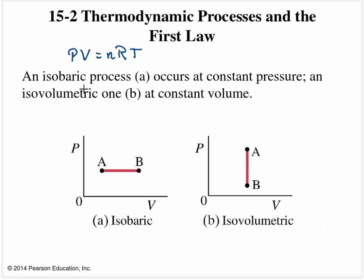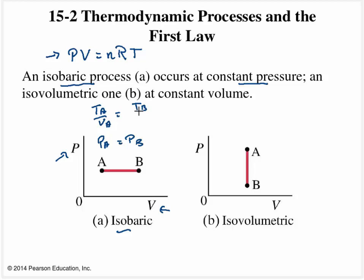The other two processes are isobaric — occurring at constant pressure — which looks like a straight horizontal line on a PV diagram, where pressure at A equals pressure at B. Because pressure is constant, we can rewrite the ideal gas law as temperature at A divided by volume at A equals temperature at B divided by volume at B. There's also an isovolumetric process where volume at A equals volume at B, and I'll leave it to you to derive the corresponding ideal gas law expression.